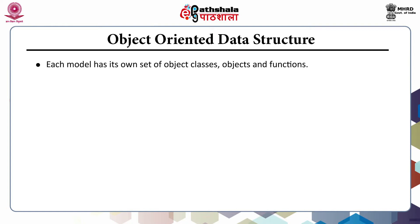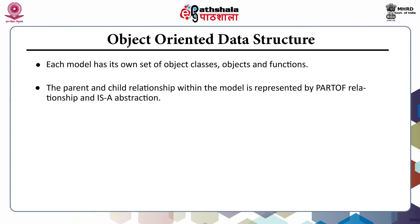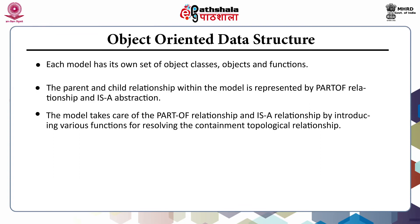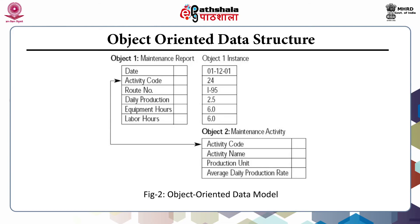Each model has its own set of object classes, objects, and functions. The parent and child relationships within the model are represented by the part-of relationship and is-a abstraction. The model takes care of the part-of relationship and is-a relationship by introducing various functions for resolving the containment topological relationship. In this figure, we can see the structure of the object-oriented data model.